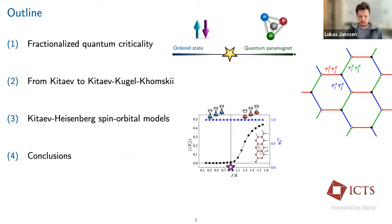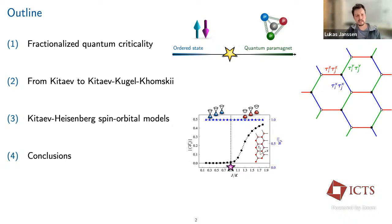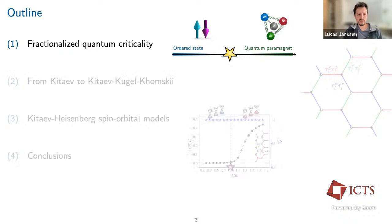Here is the outline of the talk. I will start by reviewing the concept of fractionalized versus conventional quantum criticality, then introduce a particular class of microscopic models featuring such fractionalized quantum critical points — a generalization of the spin-1/2 Kitaev honeycomb model. I will argue this generalization can be understood as a spin-orbital generalization, discuss its phase diagram, argue that it hosts a fermionic fractionalized quantum critical point, and then conclude.